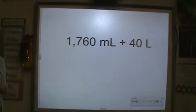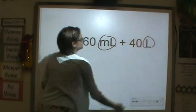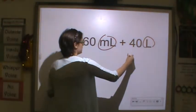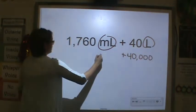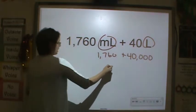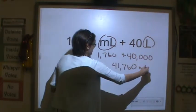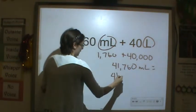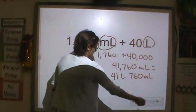Now let's do some addition. We cannot add these because the units are different, so we need to make the units the same. Forty liters is equal to forty thousand milliliters, plus one thousand seven hundred sixty, giving us forty-one thousand seven hundred sixty milliliters, which is also equal to forty-one liters and seven hundred sixty milliliters.